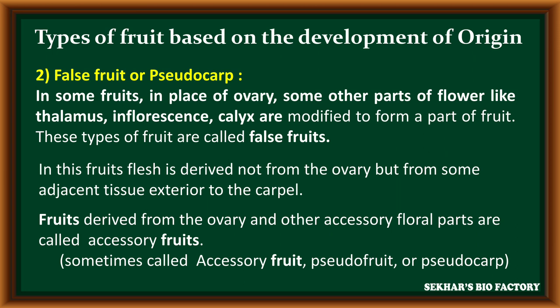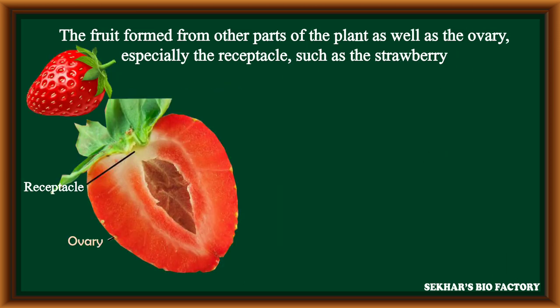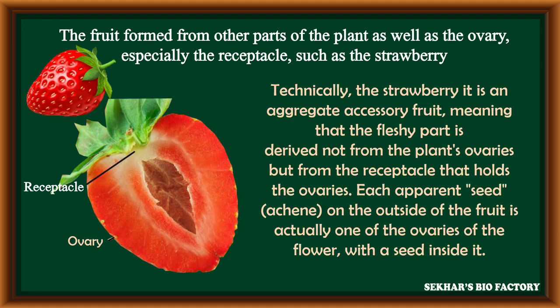False fruits are also called accessory fruits or pseudofruits. In strawberry, the fruit is formed from parts other than the ovary, especially the receptacle. Technically, the strawberry fruit is an aggregate accessory fruit — the fleshy part is derived not from the plant's ovary but from the receptacle that holds the ovary. Each small seed-like part is called an acinus, present outside the fruit, and is equal to the ovary with its seed.